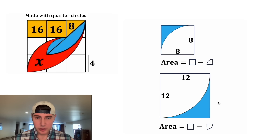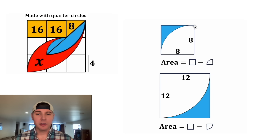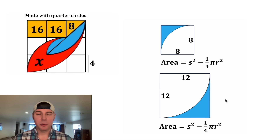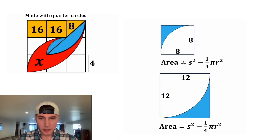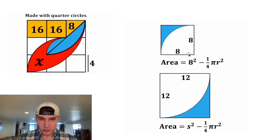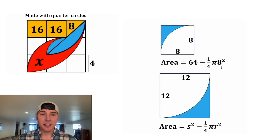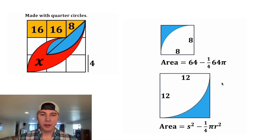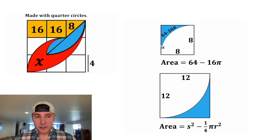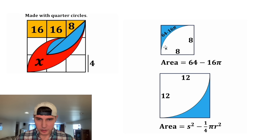To find the area of this region, we want to do the total square minus this quarter circle. The area of a square is equal to the side length squared, and the area of a quarter circle is one-fourth π r squared. Let's do the top one first. The side length is equal to 8, and the radius of this quarter circle is also equal to 8. 8 squared is 64, and one-fourth times 64 is equal to 16. So the area of this region is equal to 64 minus 16π. Let's color that orange since it's done.